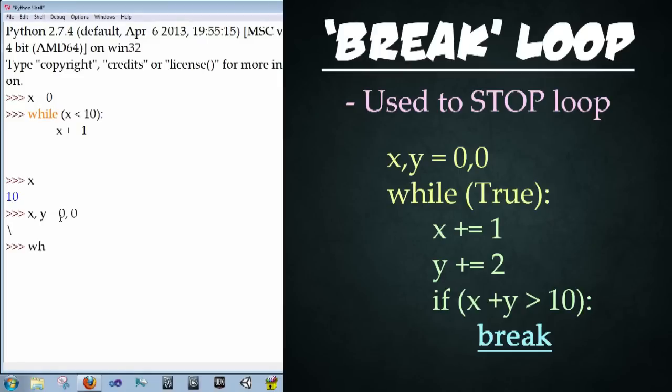Next we're going to type in while, open parentheses, true, close parentheses, colon. This is going to set up the loop to run forever. Type in enter, x plus equals one, which is going to increment the x value by one every time. And we're going to type in enter, y plus equals two. This is going to step up the value of y plus two every time. And then we're going to set up a conditional to break the loop.